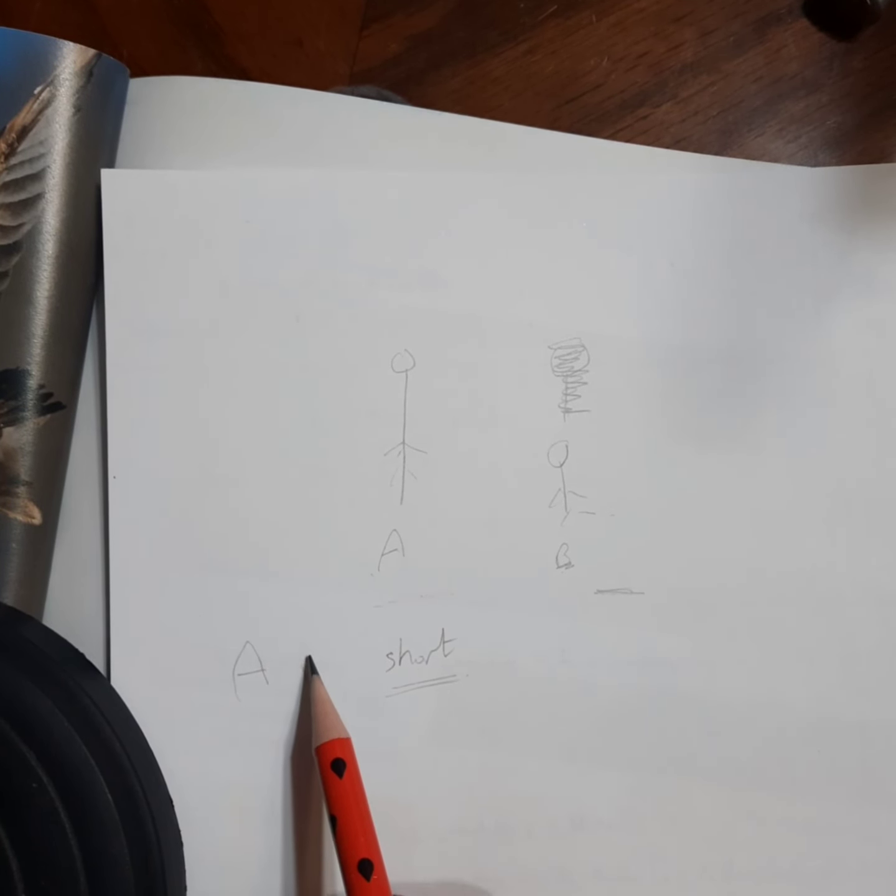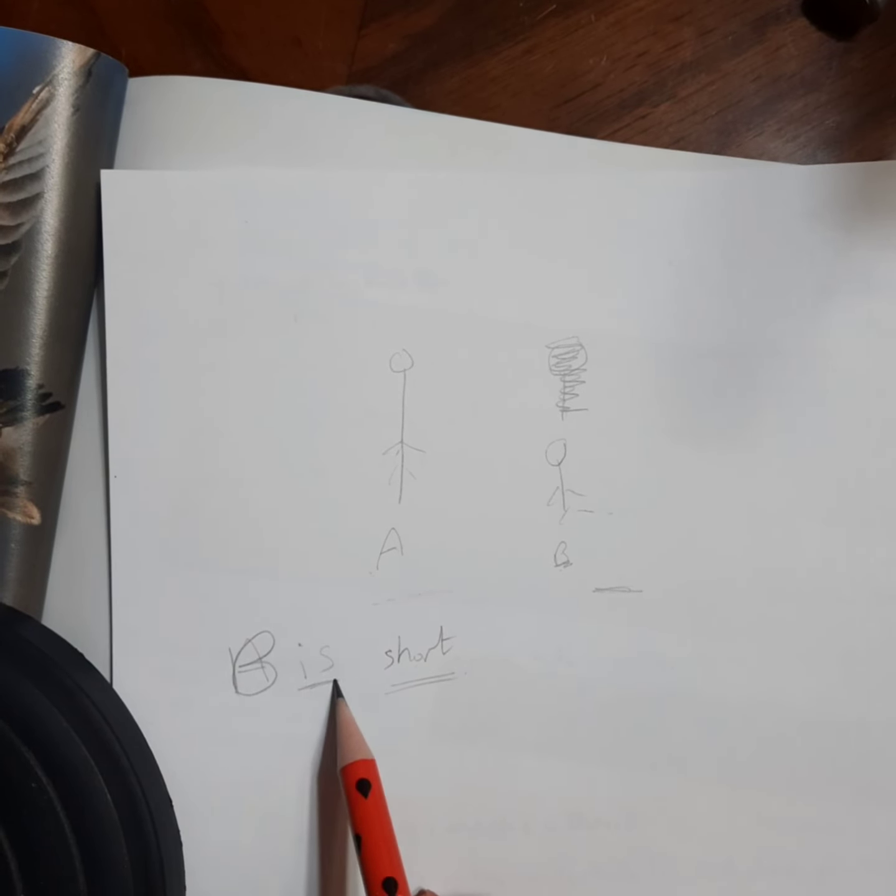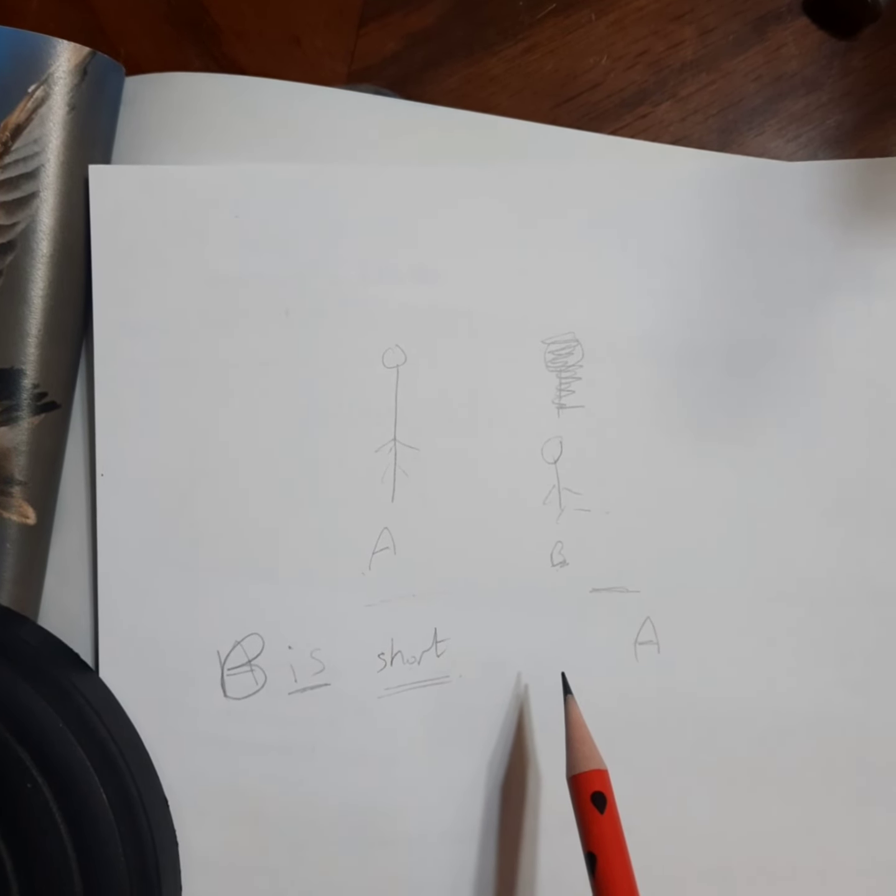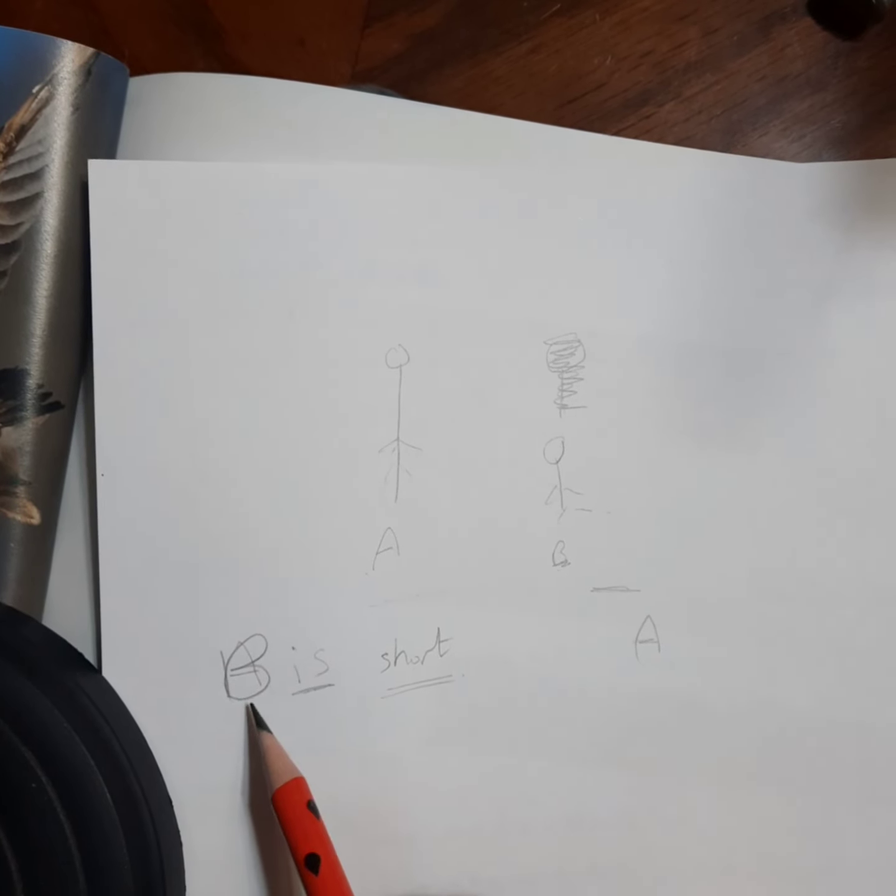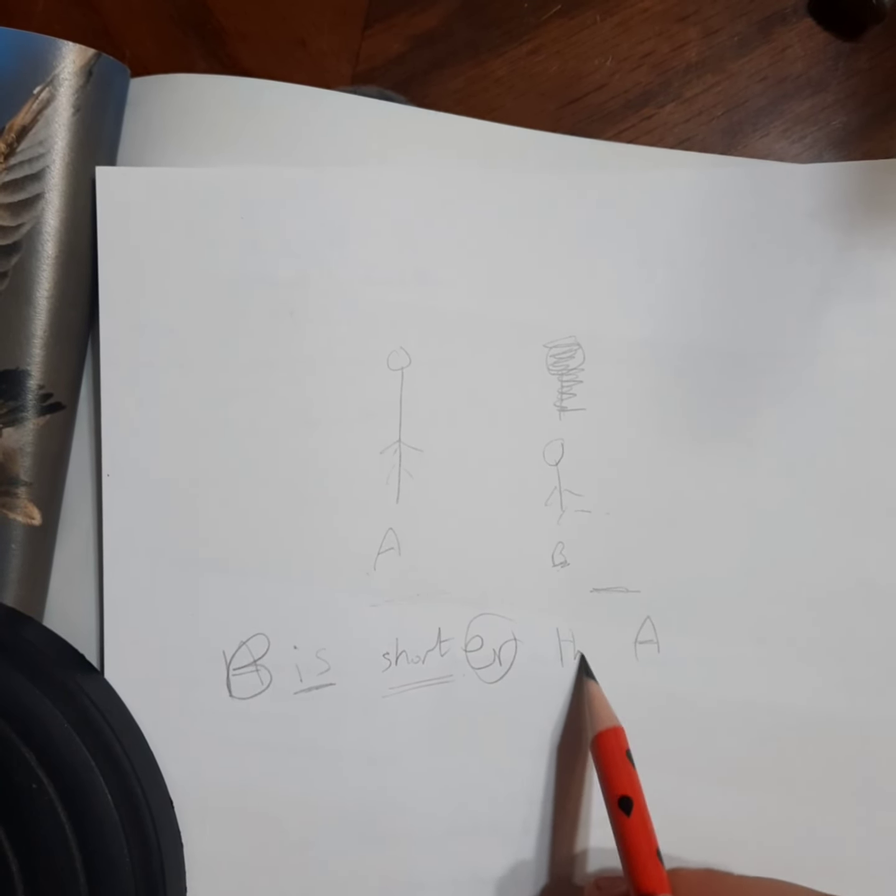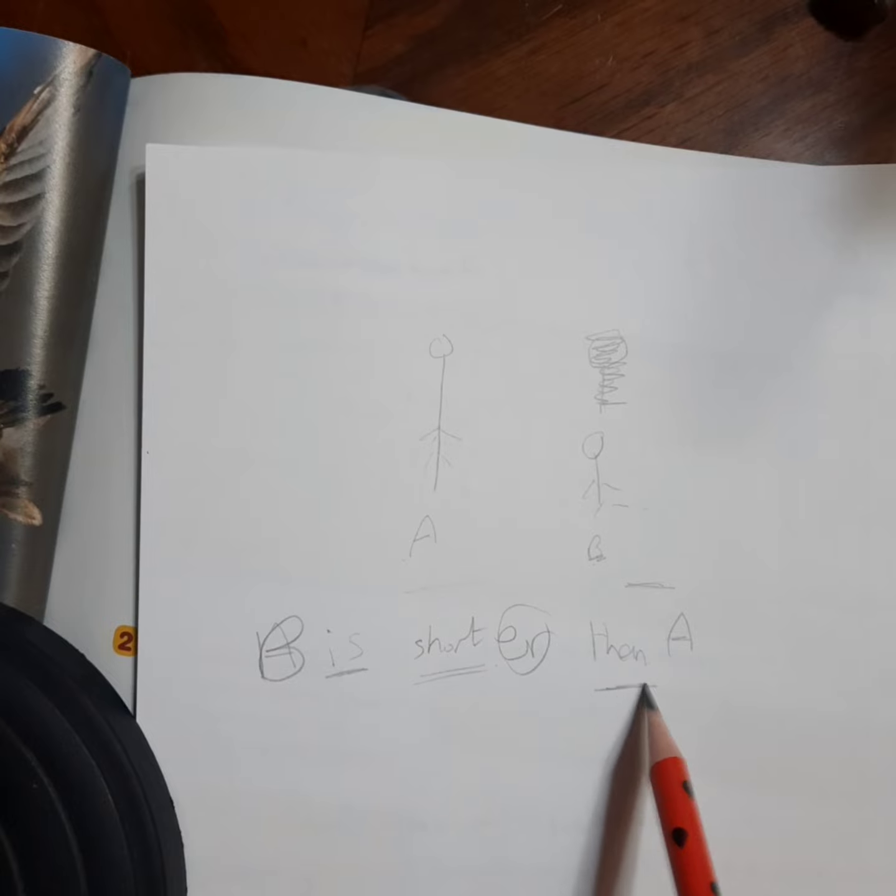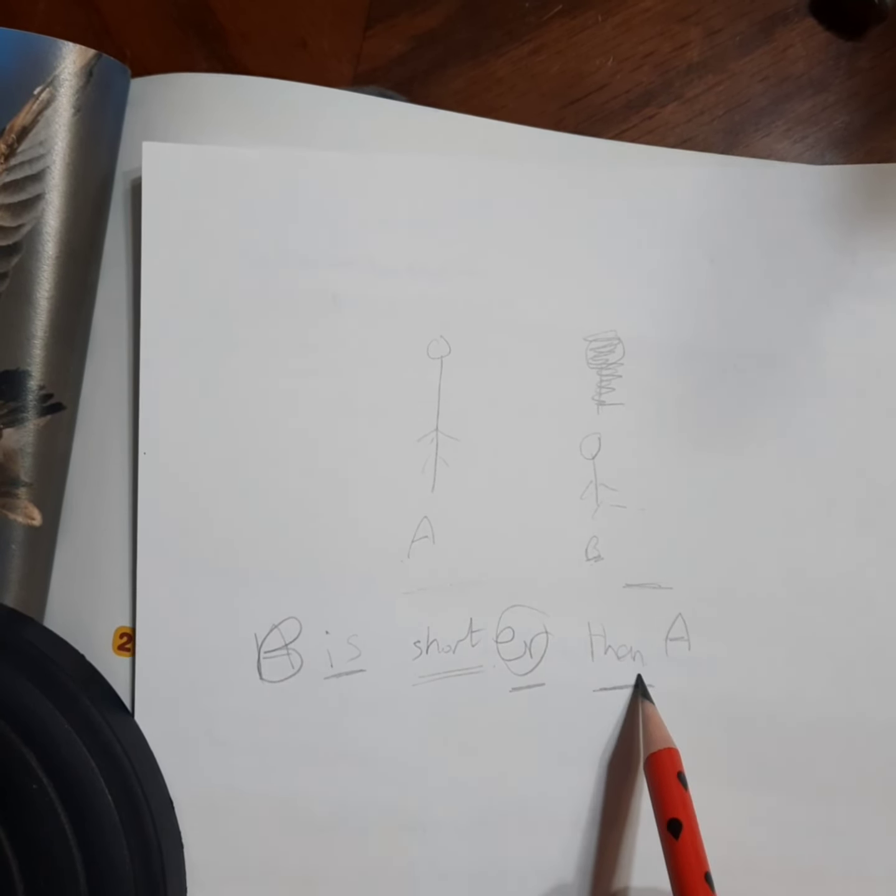B is shorter than A. كيف بنستخدم شغلتين؟ شغلة اسمها الcomparative. عشان نحكي جملة صحيحة نحكي B is short بس نزيدولها ER، بعدين نحطو than. So B is shorter than A. كيف بالعربية بنقول أقصر من، أقصر من.